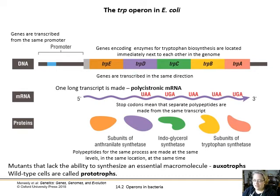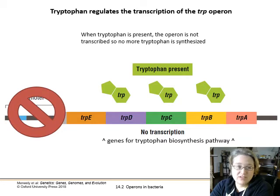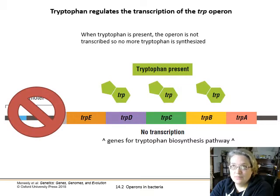If one of these genes has a mutation like a nonsense mutation, you lose this pathway, and you're called an auxotroph. The wild type are called prototrophs. The key regulator of this operon — and there are about four different ways it's regulated — is tryptophan itself regulating transcription. Tryptophan is the least common of the amino acids; you only need a tiny bit.